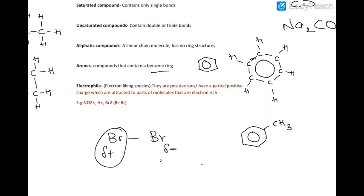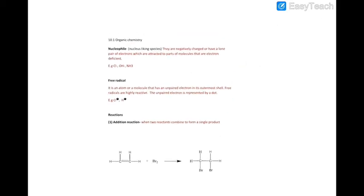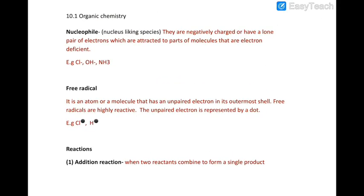So electrophiles, they are going to be small species that have a positive charge or a partial positive charge. Nucleophiles, they are negatively charged small species or they have a lone pair of electrons, and they are going to be attracted towards species that have a positive charge or which are electron deficient. So they are going to be attracted towards positive charge, attracted towards nucleus. So these are examples - negative charges. NH3 has the lone pair of electrons that is going to be attracted towards the positive charge.